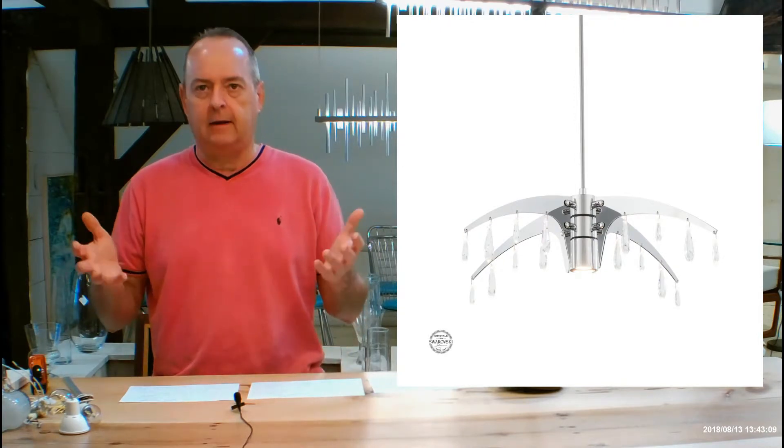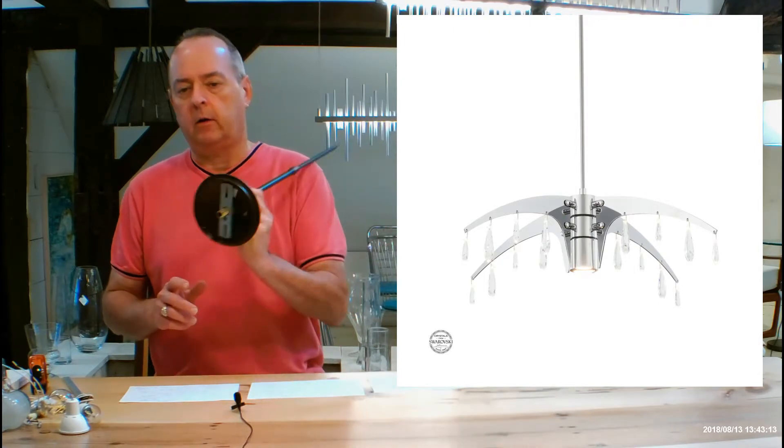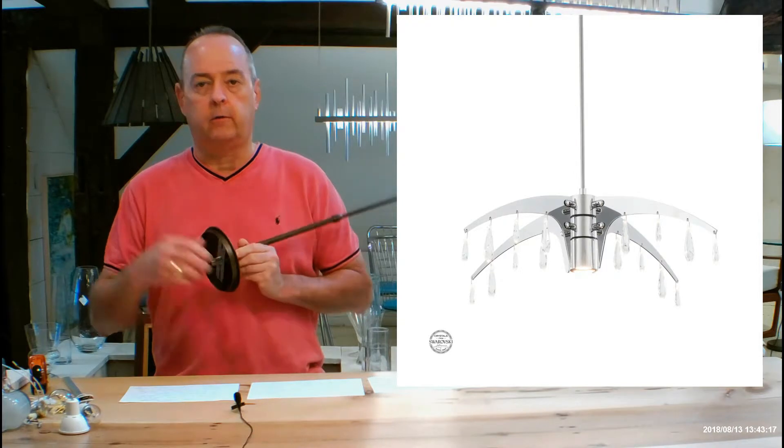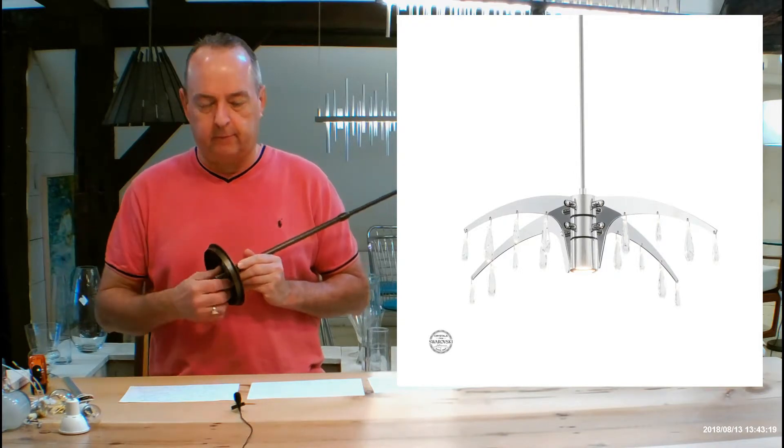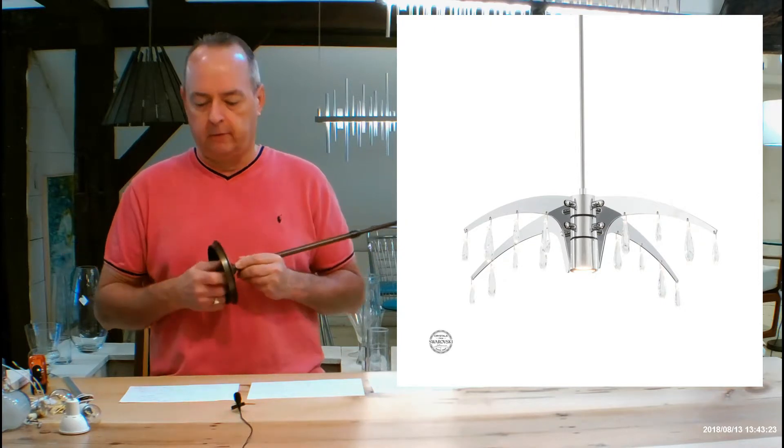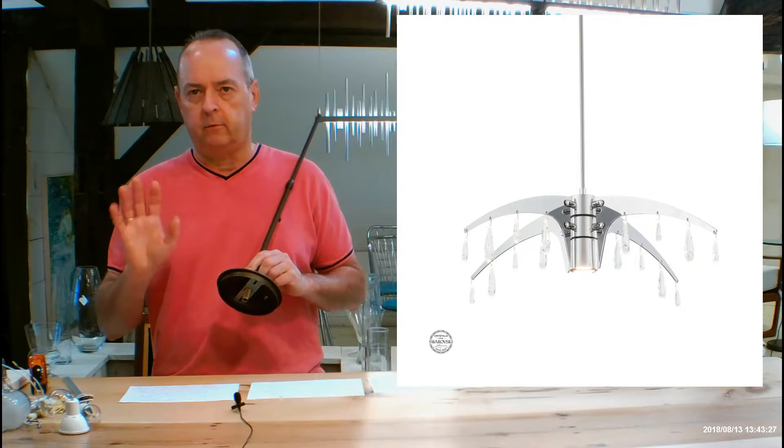What that is is detailed drawings of this fixture, including the canopy, how it goes on the ceiling, all the little details, a complete parts list. It's the same information that's going to be inside the box. So you might as well look at it now, get yourself familiar with the fixture. You can do that with all the Hubberton Forge stuff too.